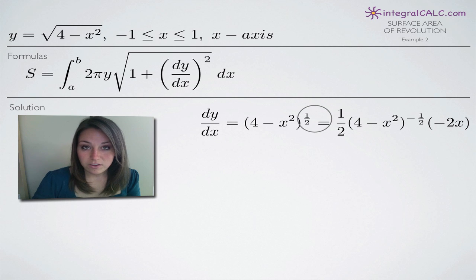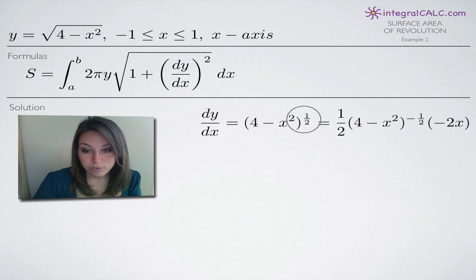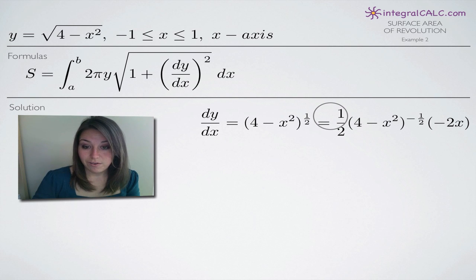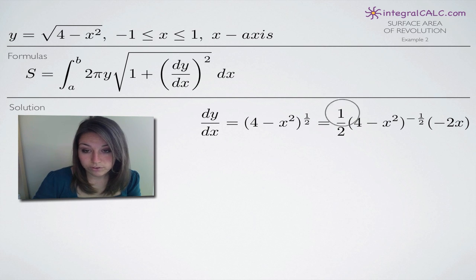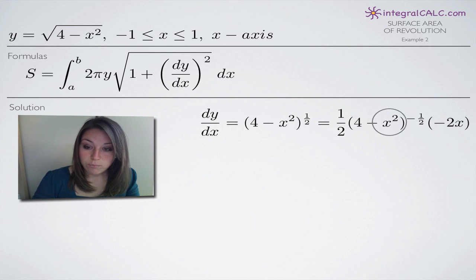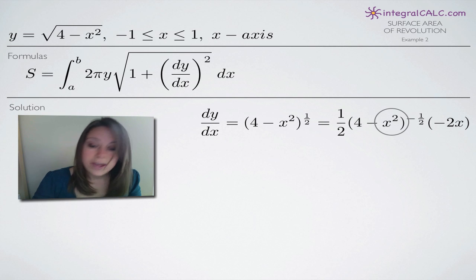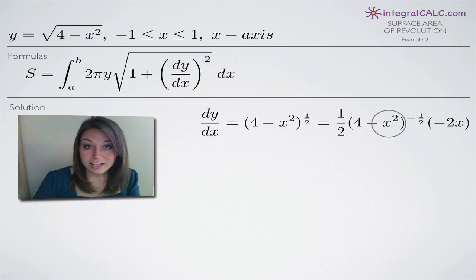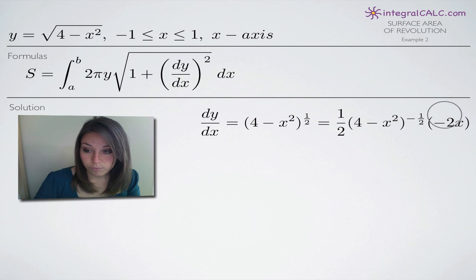Now that we've done that, it's easier to find the derivative because using chain rule, we treat the one-half power as part of the outside function and four minus x squared as the inside function. We first take the derivative of the outside — that means we multiply the one-half exponent out in front as a coefficient and subtract one from the exponent. One-half minus one gives us a negative one-half exponent, and we leave four minus x squared untouched for now. Then chain rule tells us we multiply by the derivative of the inside function. The derivative of four minus x squared is negative two x, so we multiply by negative two x.